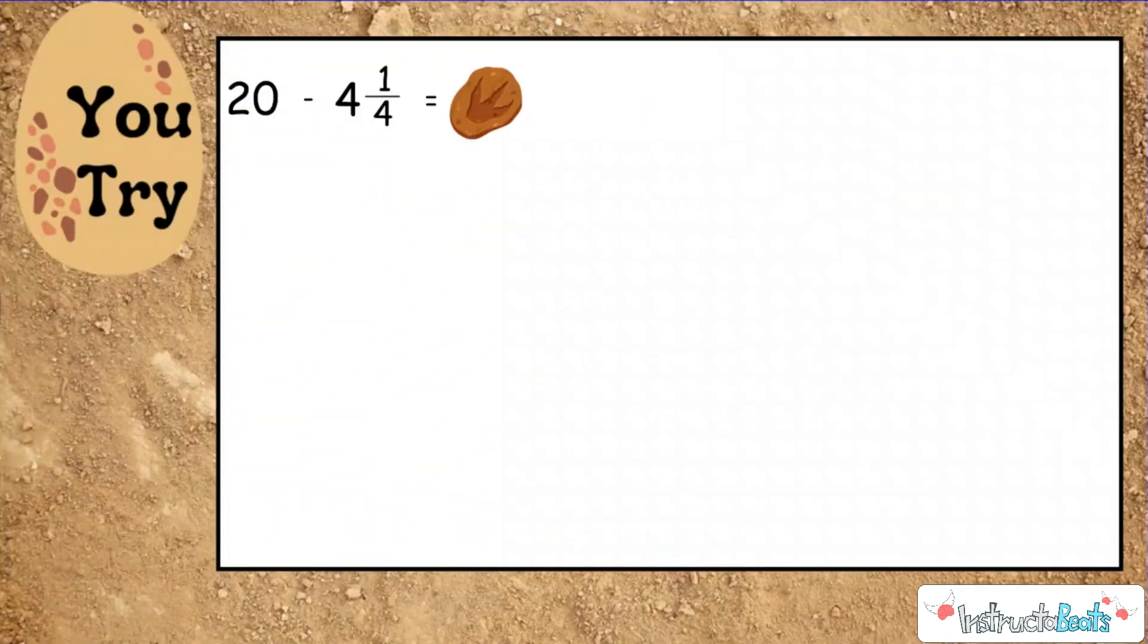All right, our you-try problem says twenty minus four and one-fourth equals this fossil right here. Your goal is to pause the video, try the problem by counting up, and see if you can find the value of that fossil.